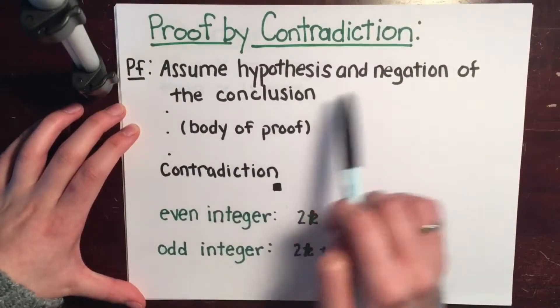So first we're going to assume the hypothesis, just like direct proofs, but then we're going to assume the negation of the conclusion. So what is a negation? Negation is simply just the opposite. So if the conclusion says that x is going to be even, then we are going to assume that x is going to be odd. We are going to assume that it is the opposite.